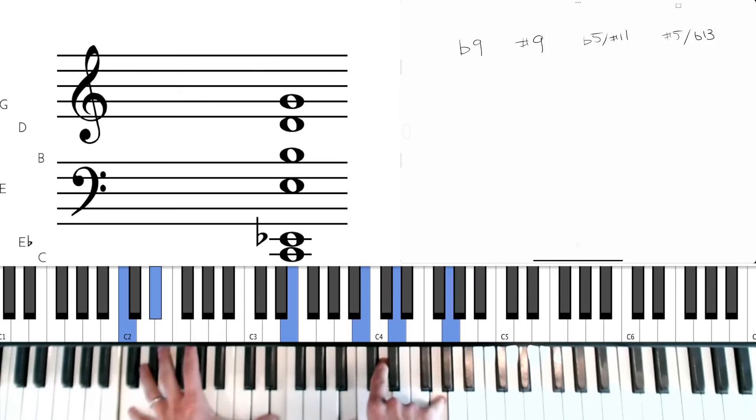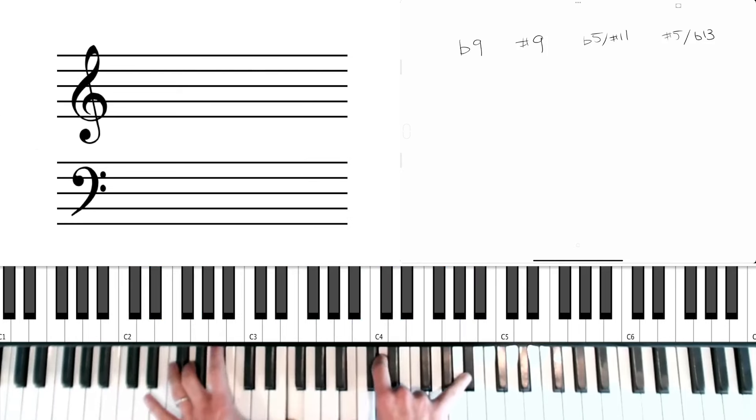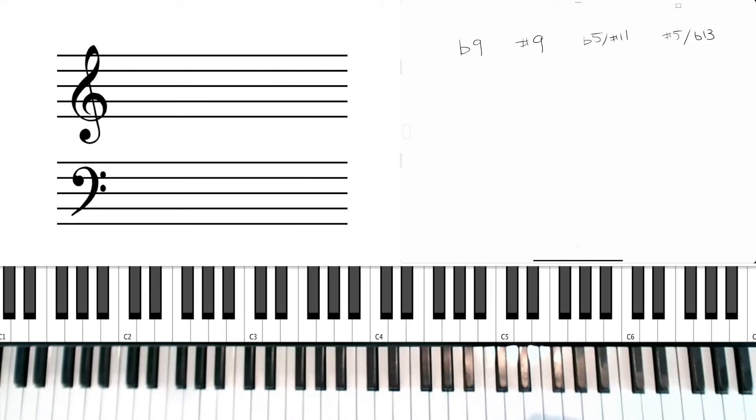And there's at least two things happening there. One is that this Bb really wants to pull up. Technically it's an A sharp, but it's written here as a Bb because it's a sharp nine, right? It's leading upwards. And I'm going to show you a way to make it pull up. I'm also going to show you a way to make it pull down. So that's one thing that's happening.